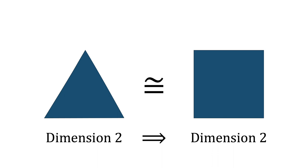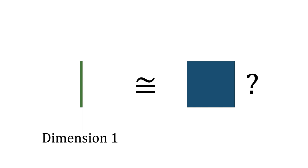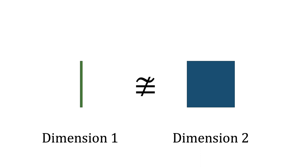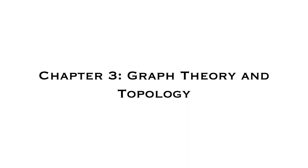And if a triangle is homeomorphic to a square, then if the Lebesgue covering dimension of the triangle is two, then the Lebesgue covering dimension of the square should also be two. We could reformulate our square and line segment question one last time: to accomplish this goal, we need to turn to a completely different area of mathematics called graph theory.